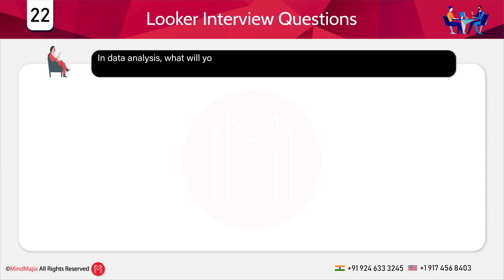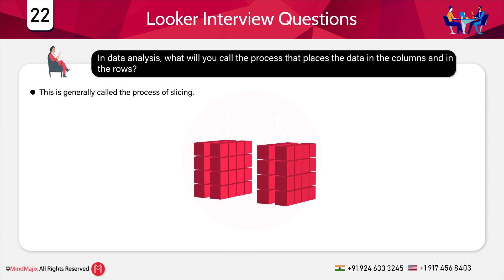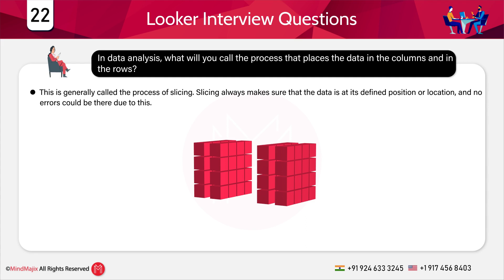The next question is: in data analysis, what will you call the process that places data in columns and rows? This is generally called the process of slicing. As we saw the concept of drilling in a previous question, after drilling another important concept is slicing. Slicing always makes sure that data is at its defined position or location and no errors could occur because of this. Drilling and slicing are very important concepts as far as data is concerned.